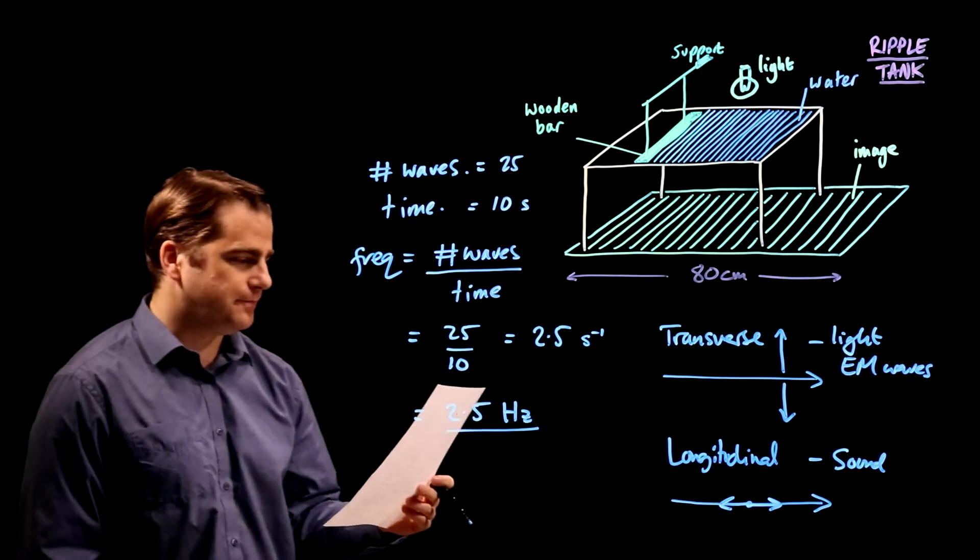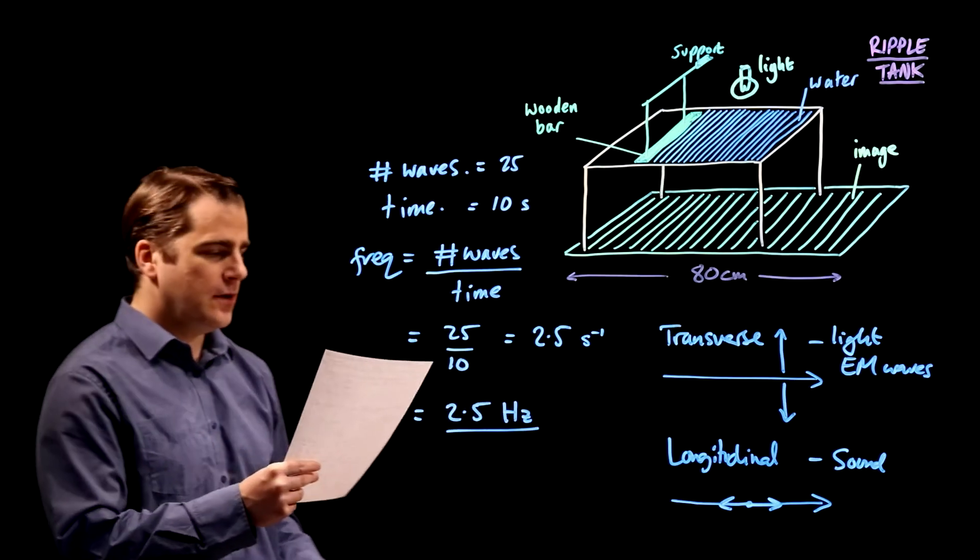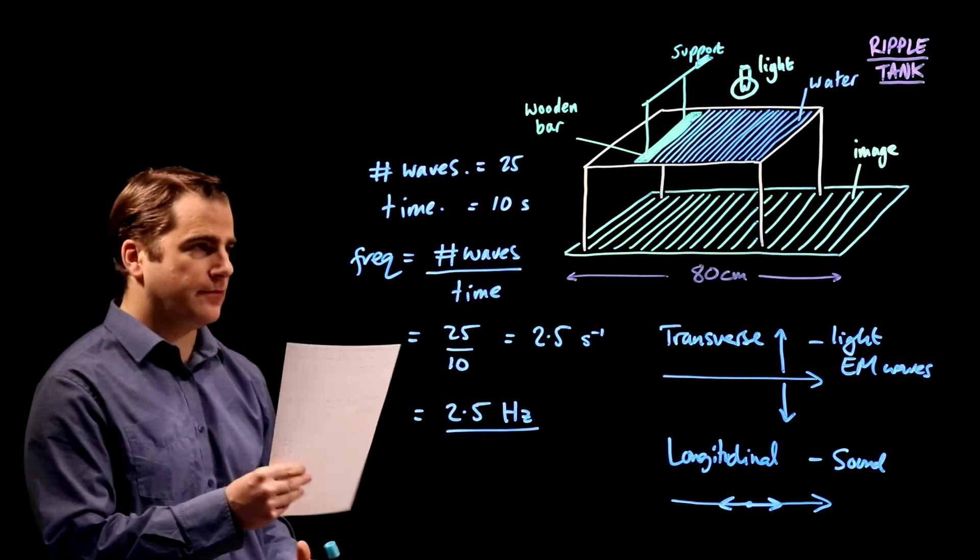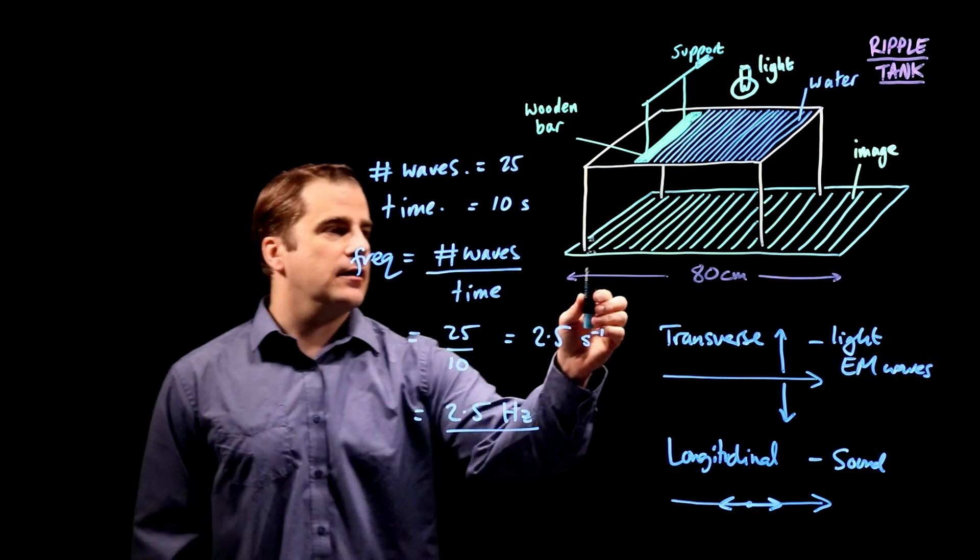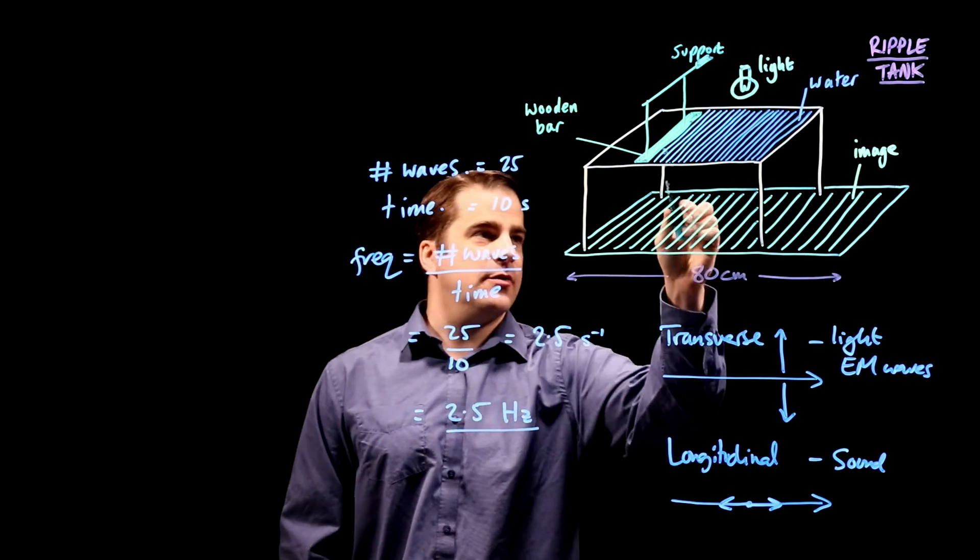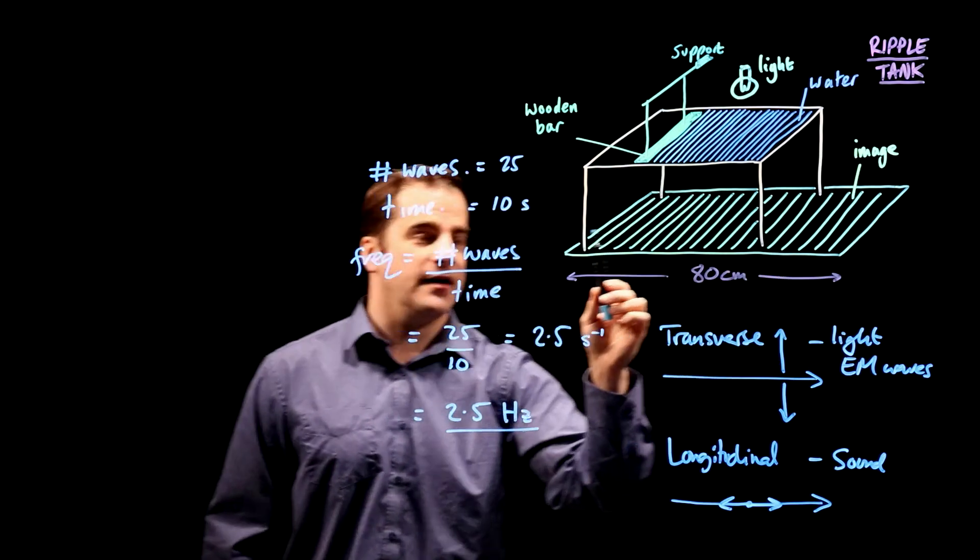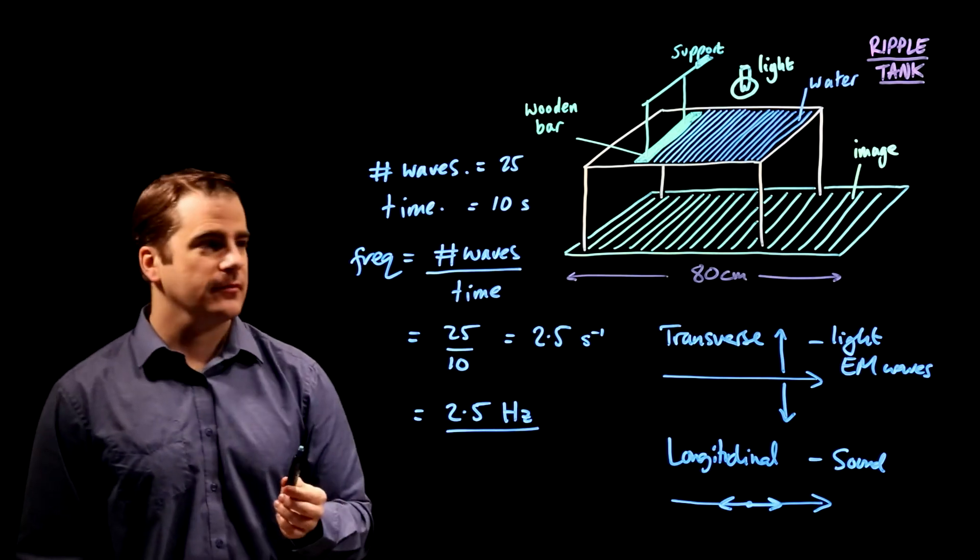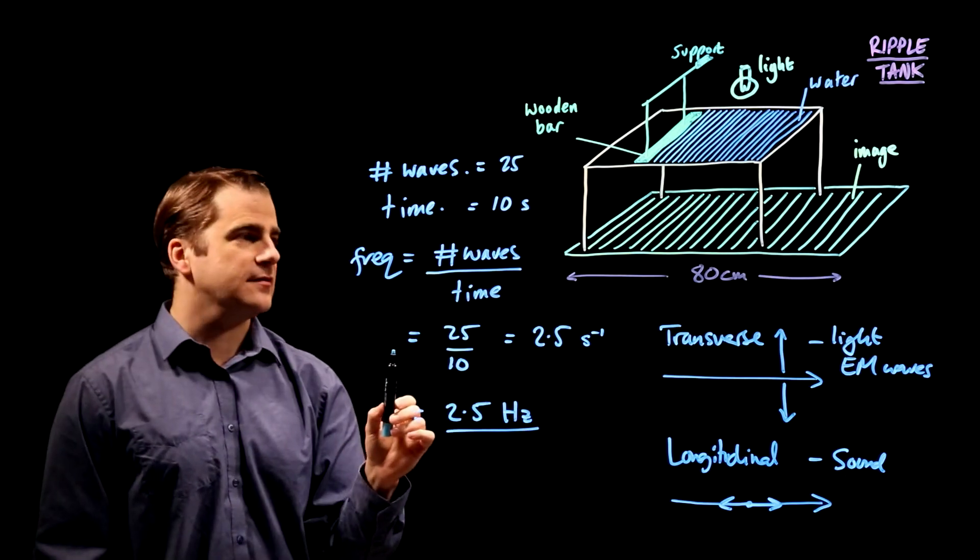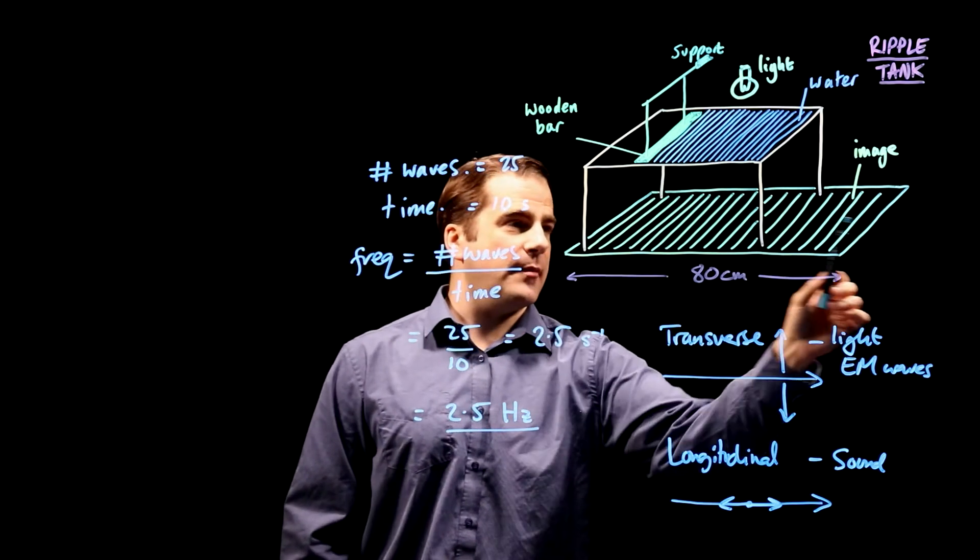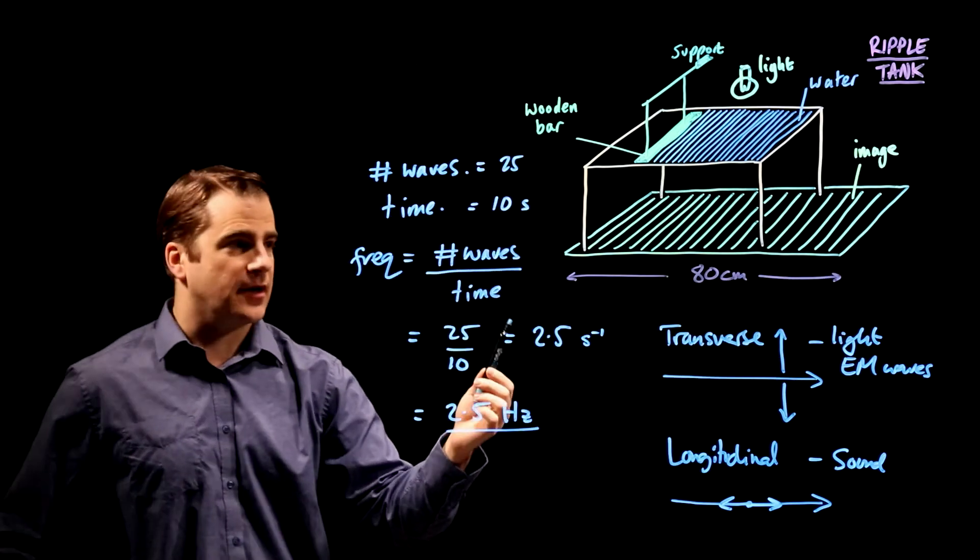Right, next bit. The screen is 80 centimetres long. What is the approximate wavelength? I've recreated the question here and I've tried to get the same number of waves in here as they have in the question. So the distance from there to there on the image is 80 centimetres. And if we know how many waves there are inside 80 centimetres, we can work out the wavelength.